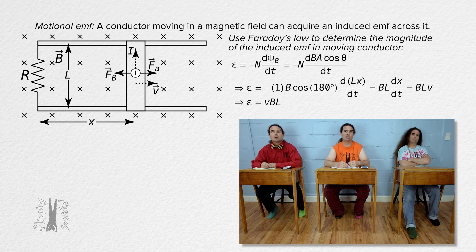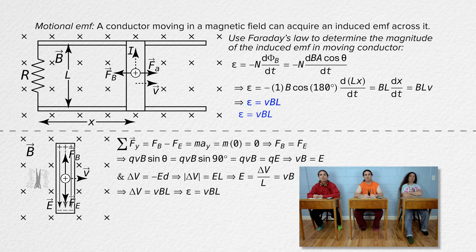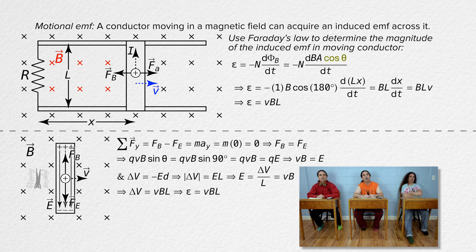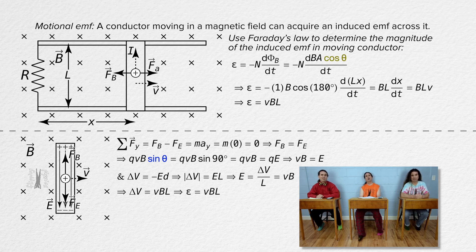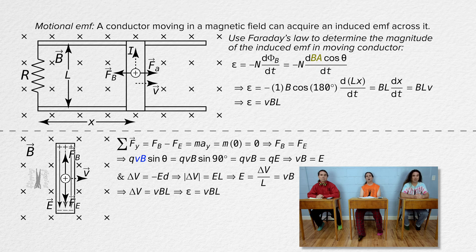We just derived the same equation for motional EMF as we did before. Motional EMF equals velocity times magnetic field times the length of the conductor. This equation assumes the angle between the velocity of the conductor and the magnetic field is 90 degrees. If it is not, you could leave the cosine of the angle in the equation. This way of deriving the motional EMF equation defines theta as the angle between the loop area vector and the magnetic field. The way we did it before defined theta as the angle between the direction of the velocity of the conductor and the magnetic field. The loop area vector and the velocity of the moving conductor are at a right angle to one another, which is why one of these equations uses cosine and the other uses sine.